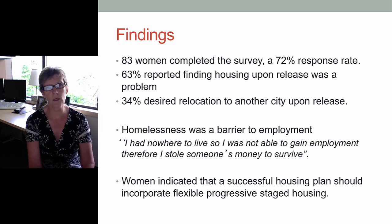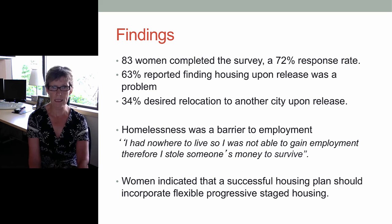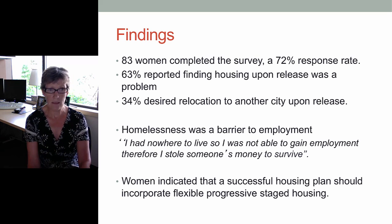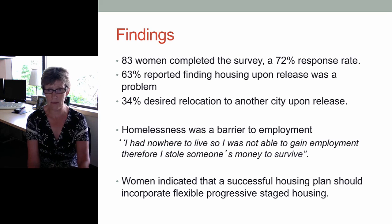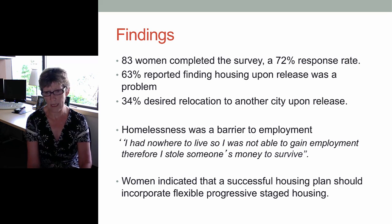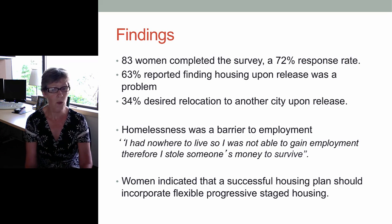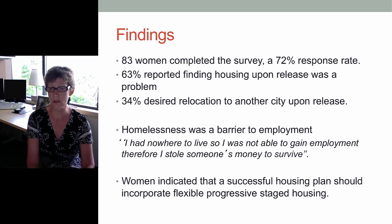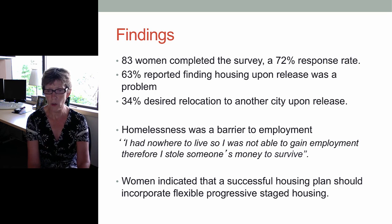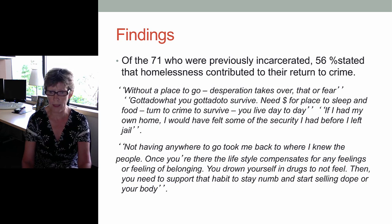The survey was sent to women in the prison at the time, with 83 women completing it for a 72% response rate. 63% reported finding housing upon release was a problem for them, and 34% had a desire to relocate to another city. It was obvious that homelessness was a barrier to employment, and the qualitative data helped explain this — one participant stated: 'I had nowhere to live, so I was not able to gain employment, therefore I stole someone's money to survive.' So it was a barrier to employment but also led to criminal activity. Women indicated that a successful housing plan should incorporate flexible, progressive, staged housing — not one size fits all — as people needed different things depending on where they were in their lives and their family situation.